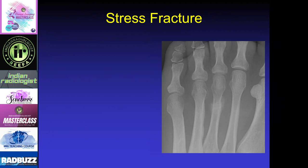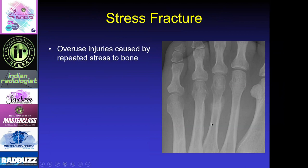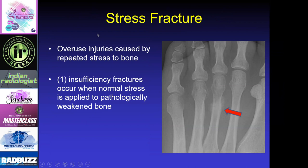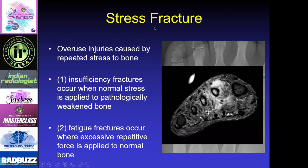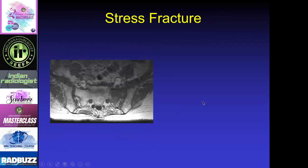The next traumatic lesion is a stress fracture. Sometimes these can look very aggressive. Remember that insufficiency fractures occur when you have normal stress applied to weak bones, and fatigue fractures occur where excessive repetitive force is applied to normal bones — both are subsets of stress fracture. Here on the MRI we can see edema within the second and third metatarsal with a lot of soft tissue enhancement. It's helpful to note that there are two lesions, because the chances that you have two bone tumors right next to each other would be very unlikely.